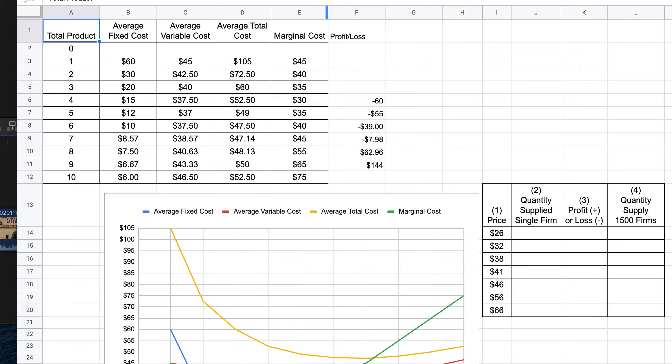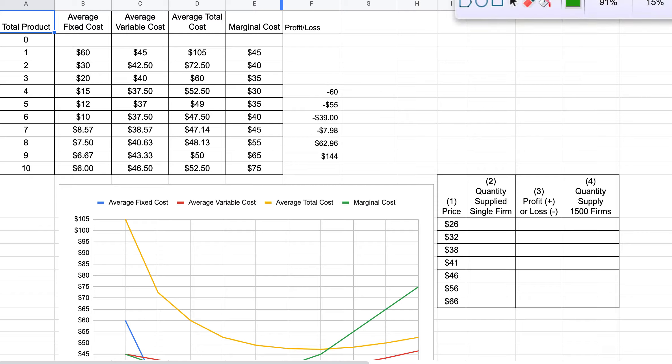We were going to produce right here. So if price equals $46, that means MR equals 46.